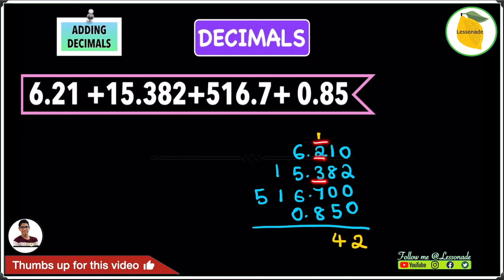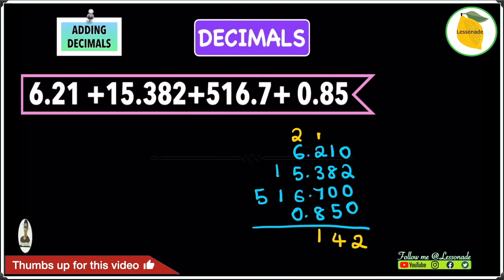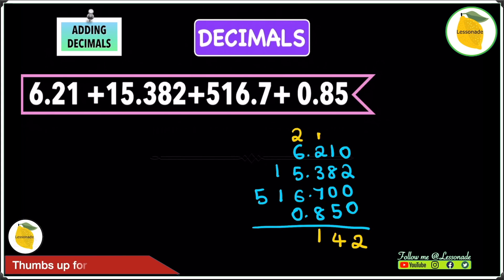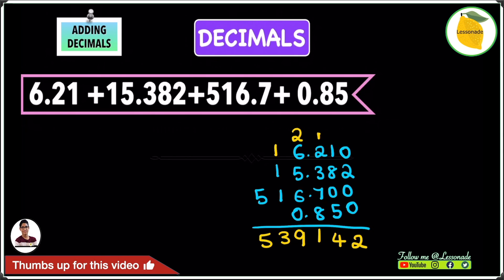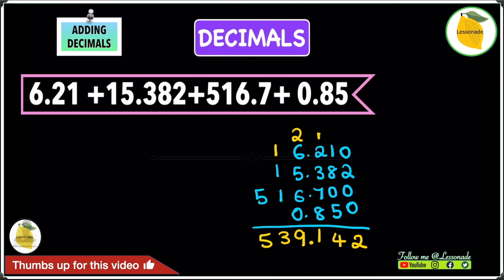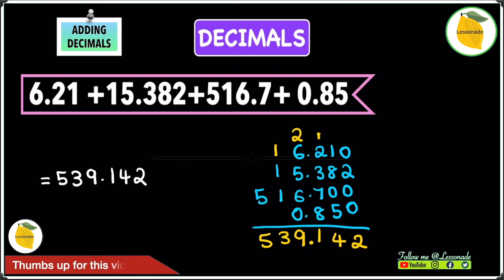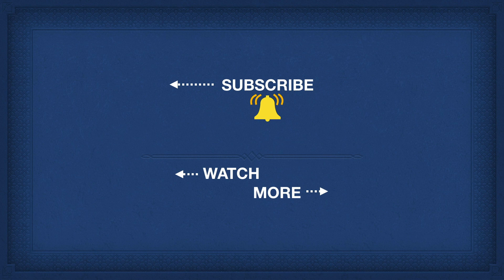1 plus 2 is 3, plus 3 is 6, plus 7 is 13, plus 8 is 21 — write 1, carry 2. 2 plus 6 is 8, plus 5 is 13, plus 6 is 19, plus 0 is 19 — write 9, carry 1. 1 plus 1 is 2, plus 1 is 3 — write 3. Then write 5. Add the decimal point after the 9, giving us an answer of 539.142.